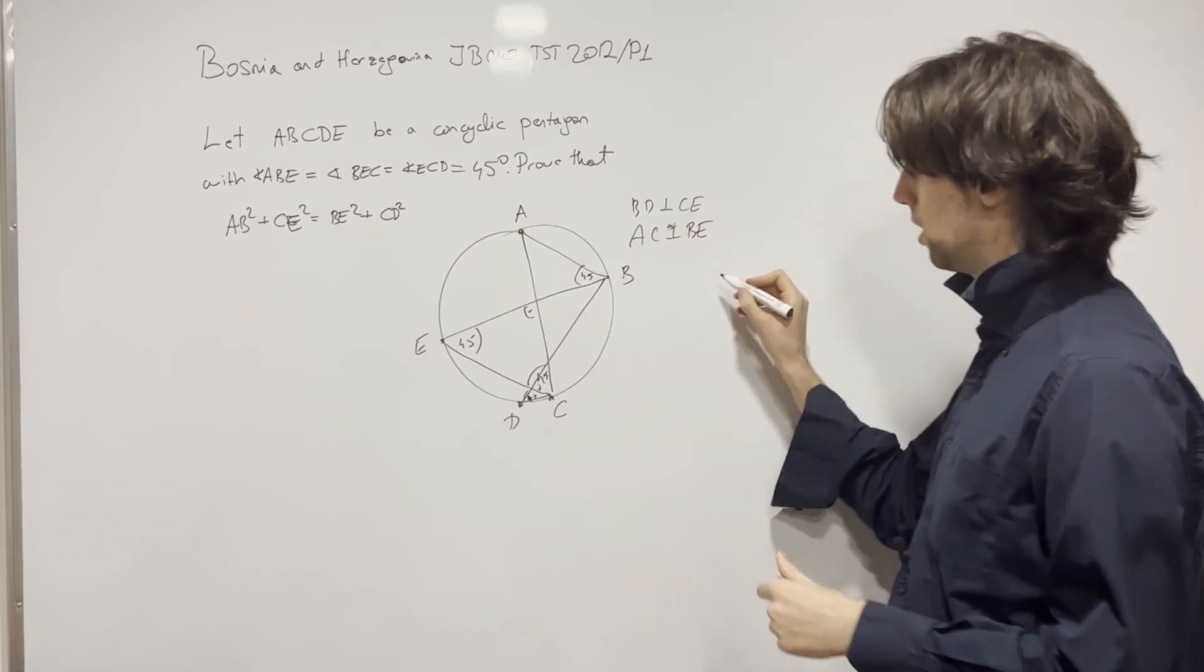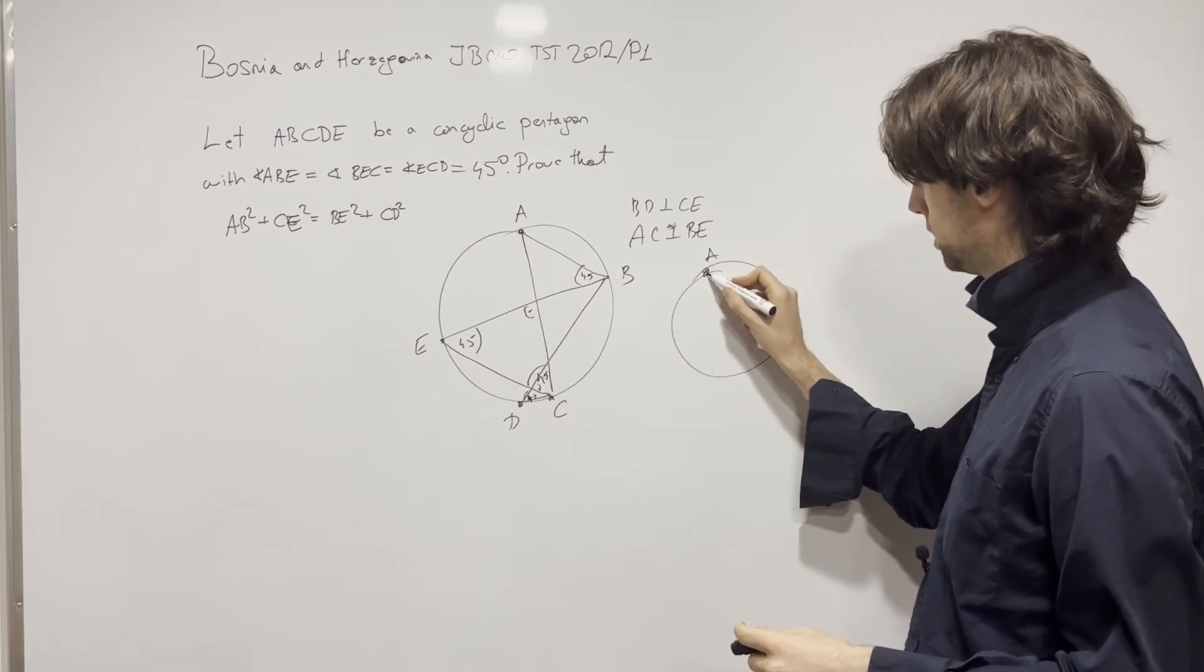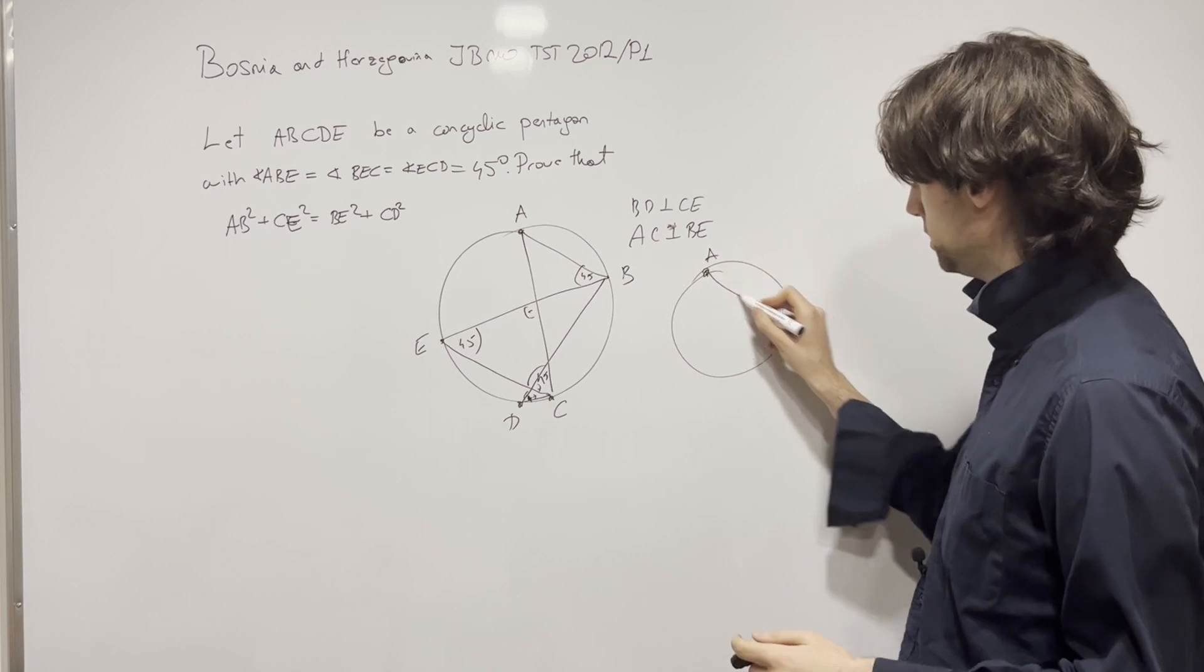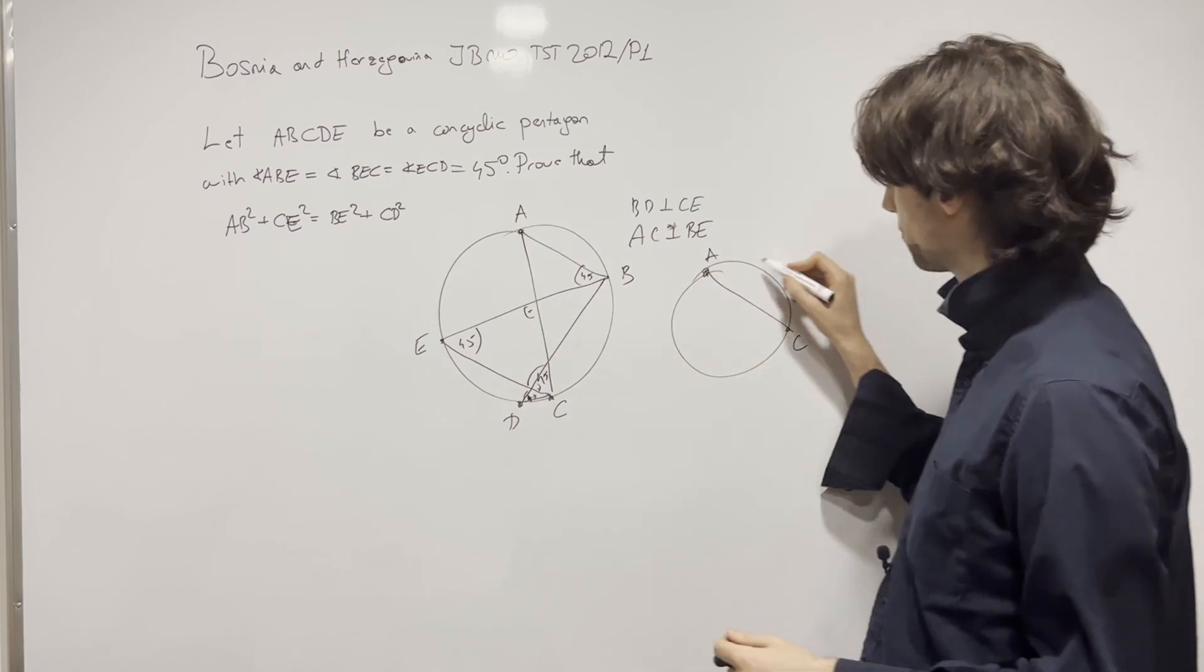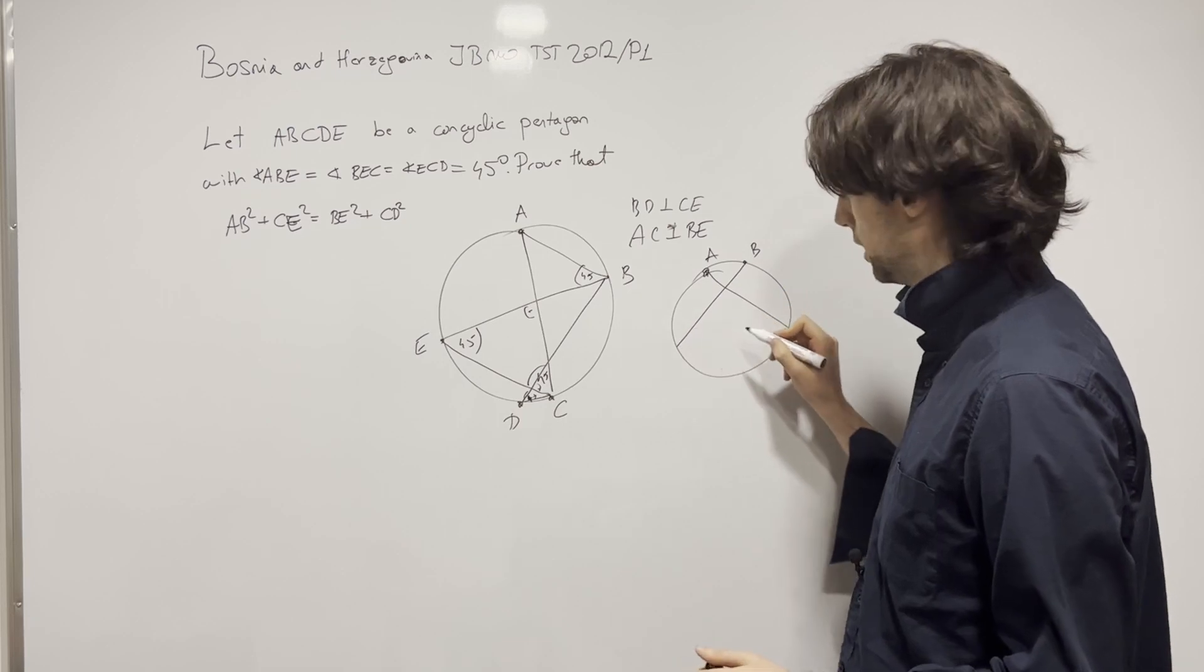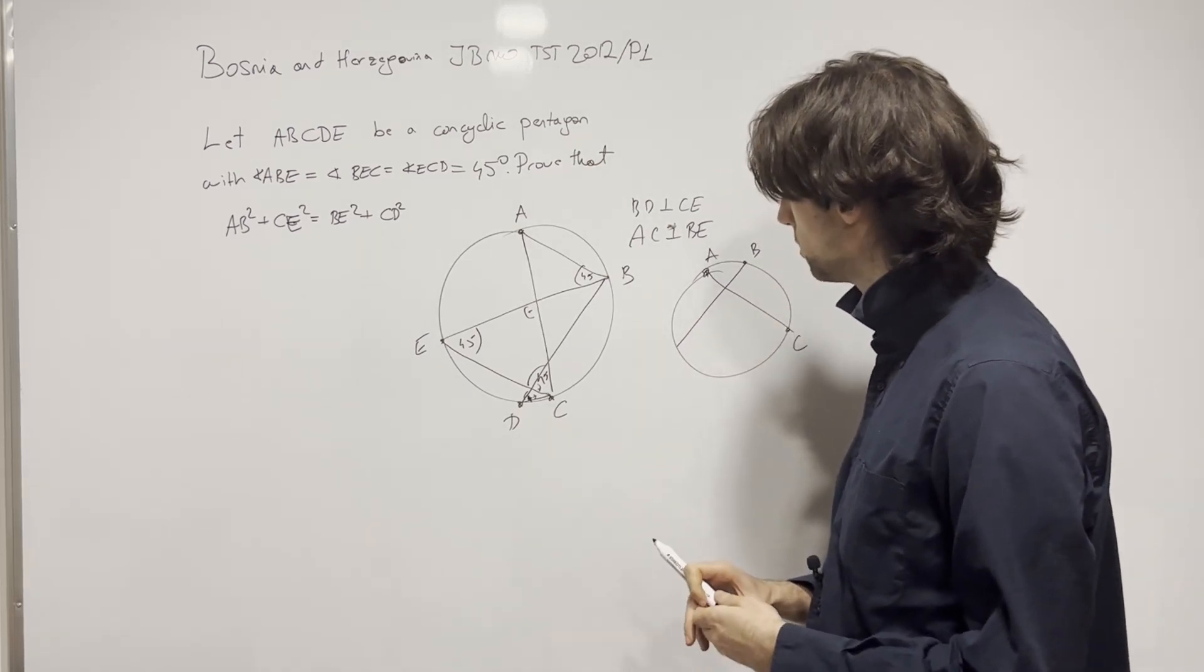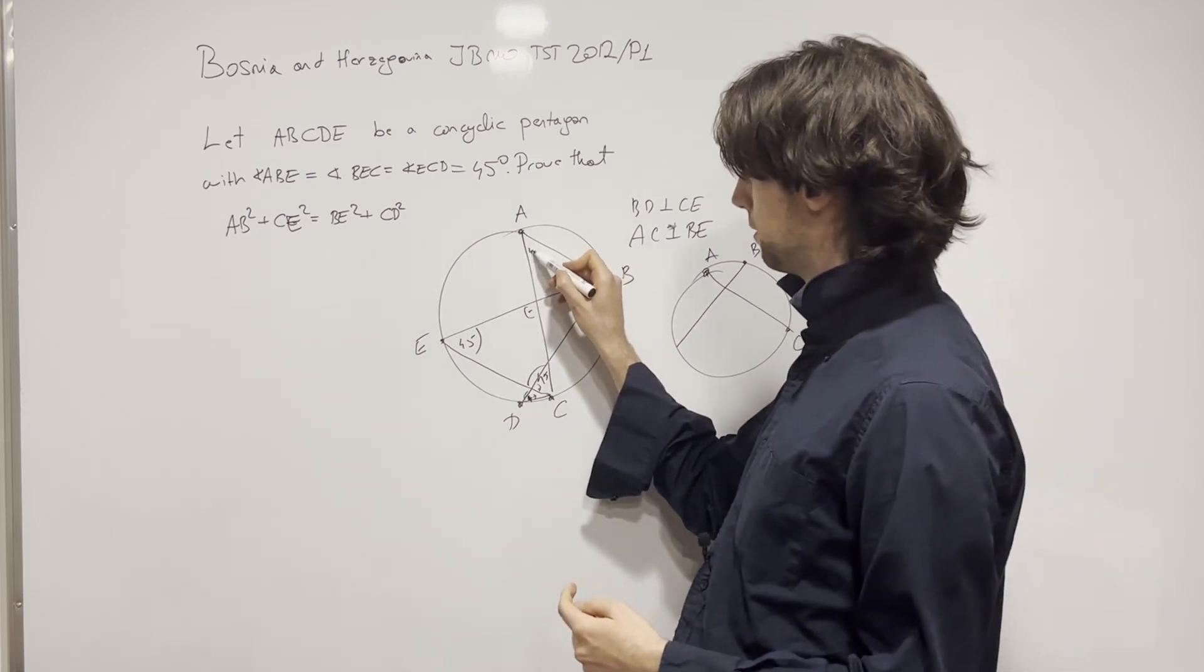So what do we have? We need to draw this in a way such that we're going to have A, then a point C here, AC, point B, such that this is at a 45 degree angle. However, wait a second, this is at a 45 degree angle.